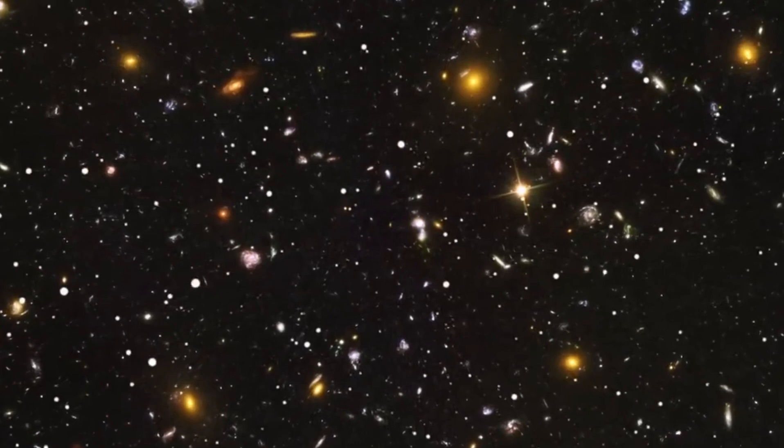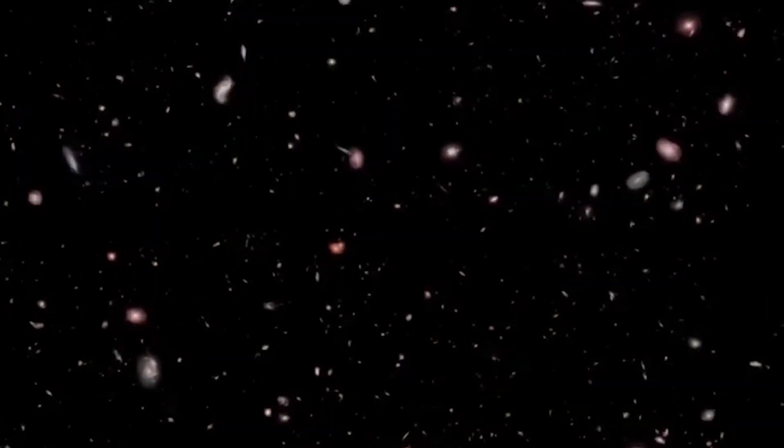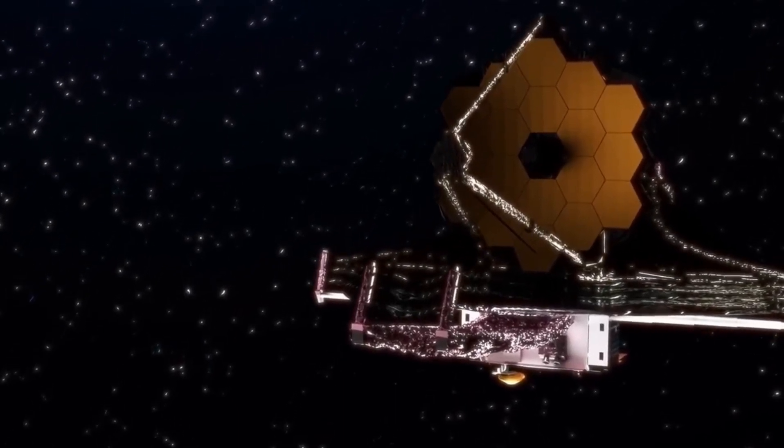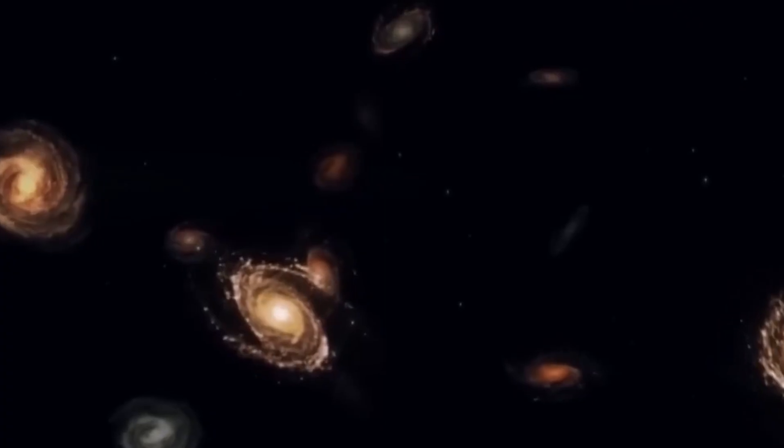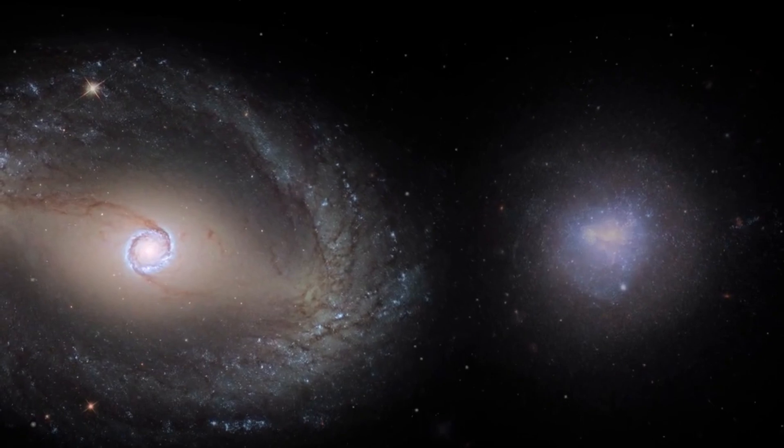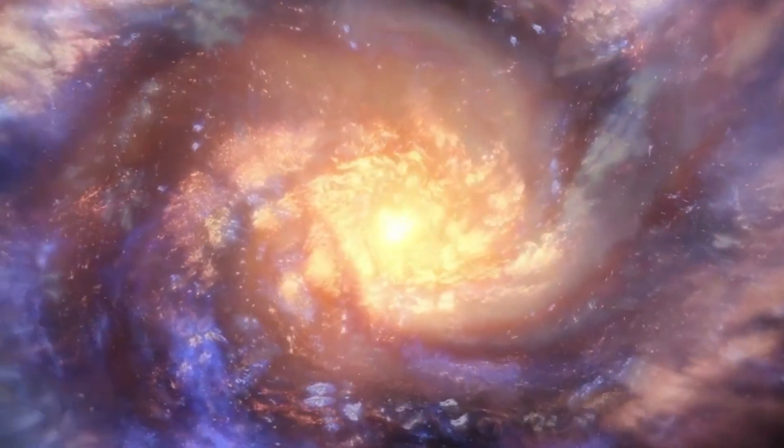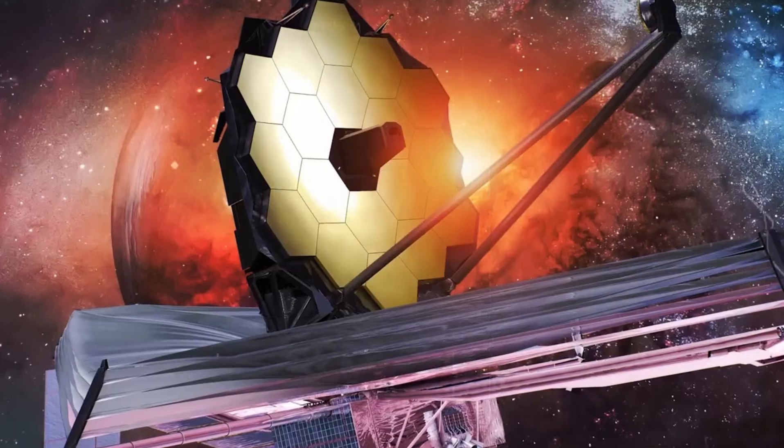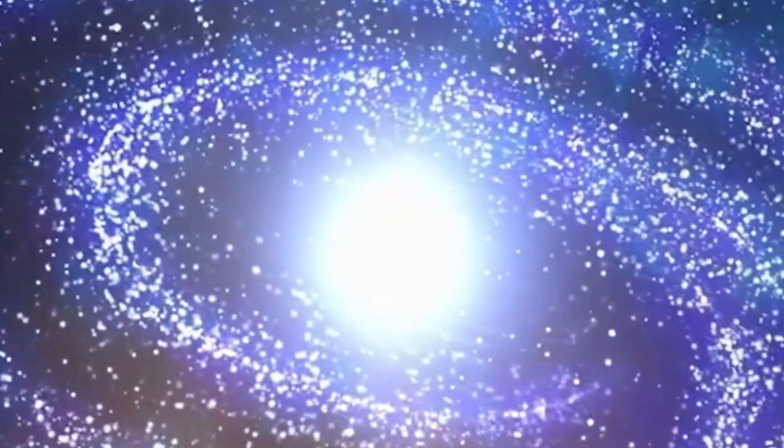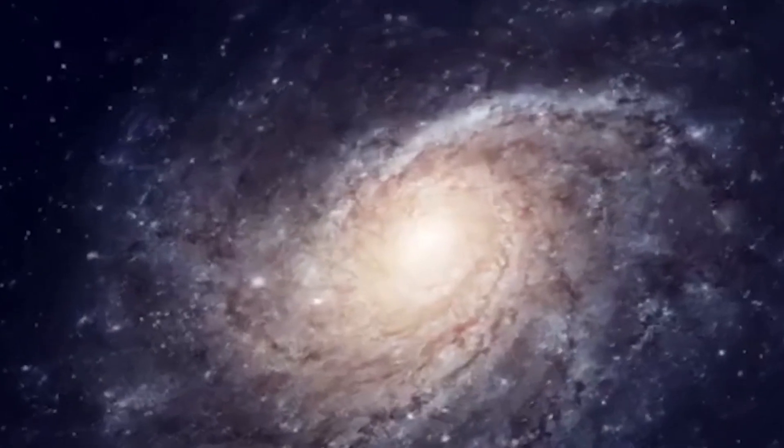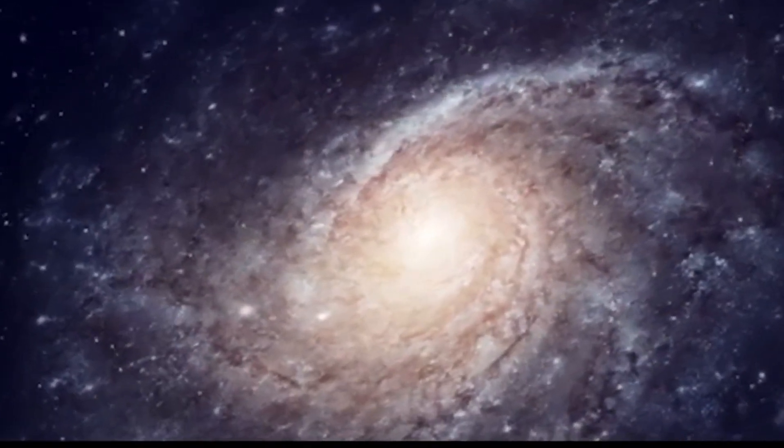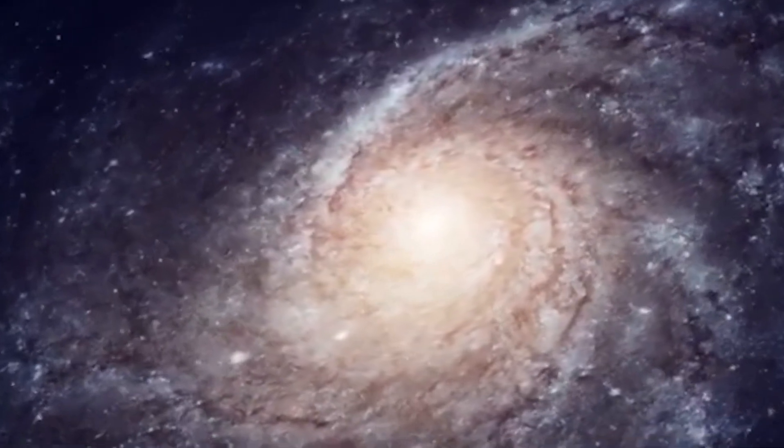And so what that means is that we are viewing these galaxies very shortly after the Big Bang. Only 600 million years had passed since the Big Bang. I know it sounds like a lot, 600 million years, but our universe is 13.8 billion years old. So we're really looking at the infant universe when it was only 5% of its current age. In reality, these galaxies were a mind-boggling 50 times more massive than originally thought, leaving scientists grappling to understand how such massive galaxies could have formed so early in the universe's history.